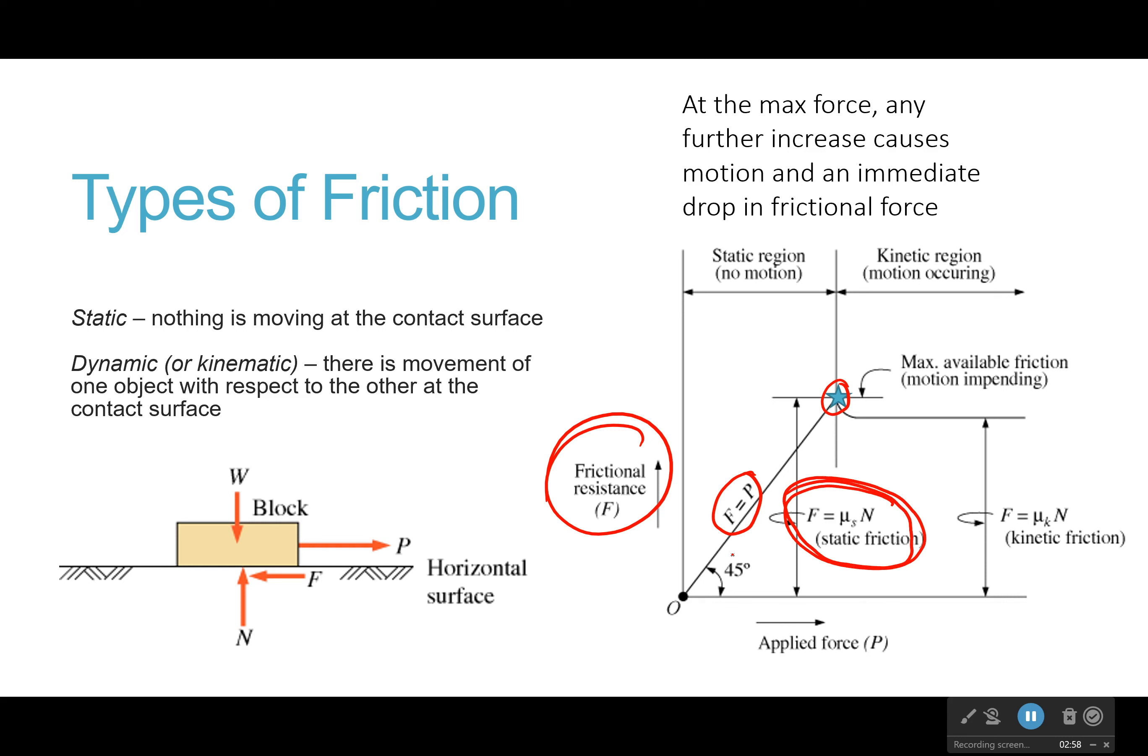And that's where this point equation comes in right here. When things are about to, motion is about to begin, the motion is imminent. Imminent or impending. Both of those are words you will see in your problems. When motion is impending or imminent, you can use this equation to calculate friction. Where we have force is equal to our static friction coefficient times the normal force, which is how hard the ground is pushing up on your object.